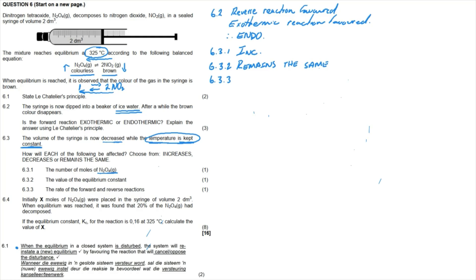Question 6.3.3: how are the rates of the forward and reverse reactions affected? Since the volume has decreased, the pressure in the system has increased. Increasing pressure increases the number of collisions and therefore the number of effective collisions, so the rate of both the forward and reverse reactions increases.